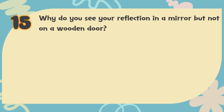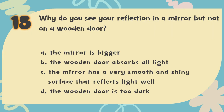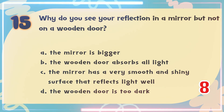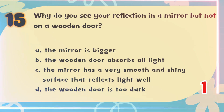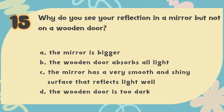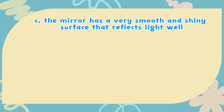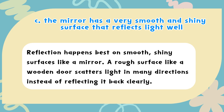Number 15. Why do you see your reflection in a mirror but not on a wooden door? The choices are: A. The mirror is bigger; B. The wooden door absorbs all light; C. The mirror has a very smooth and shiny surface that reflects light well. The correct answer is C. Reflection happens best on smooth, shiny surfaces like a mirror. A rough surface like a wooden door scatters light in many directions instead of reflecting it back clearly.